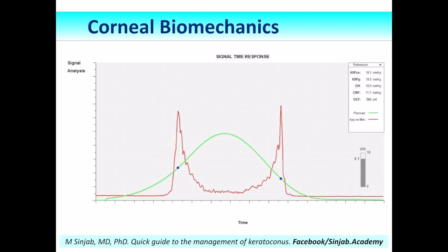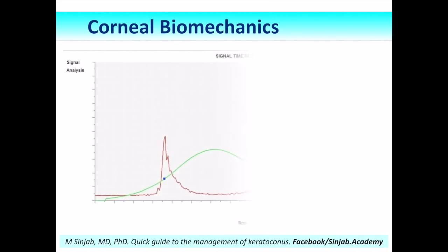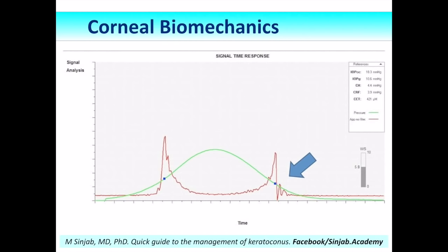Looking back at the waveform: this is the waveform of a normal eye compared with that of a keratoconus eye. After the second red peak, there is a flutter. This fluctuation means that when the cornea starts to recover its primary shape, it takes a fluttering movement because it is weak and thin. This is a hallmark of ectatic corneal disorders, even in very early stages and even in forme fruste keratoconus. This sign should be used as a screening test for all patients coming for photorefractive surgeries, as it may diagnose forme fruste keratoconus.